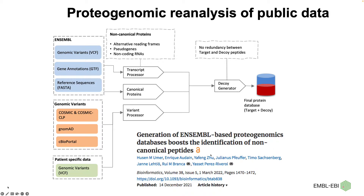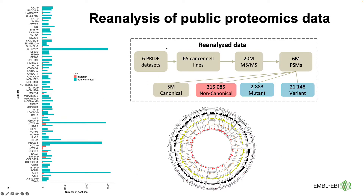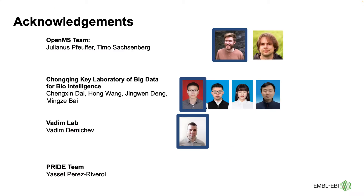We have used this pipeline with multiple datasets. Recently we published a re-analysis of multiple cell lines to find ensemble-based proteomic non-canonical peptides — a collaboration with the Leitao group and others. We managed to re-analyze six datasets in PRIDE covering more than 65 cancer cell lines and 20 million MS/MS spectra, finding around 2,000 novel peptides that were biologically relevant. Thanks to the OpenMS team, especially Timo and Juliane, to Vadim for DIA-NN, and our team collaborating with Professor Chen in the Zhongqi lab.